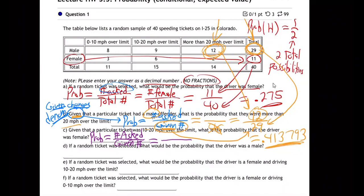Is it given that they're a female? Is that what's given in this problem? Are we given that it's a female? No. We're given that the ticket was 10 to 20 over — that's what we're given. And then we're being asked if it's a female.